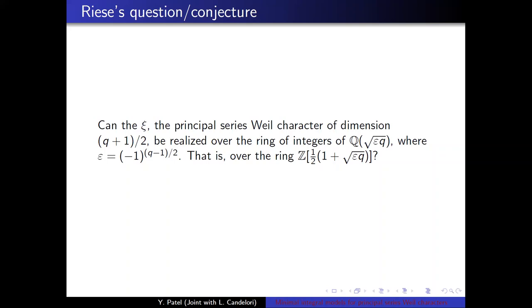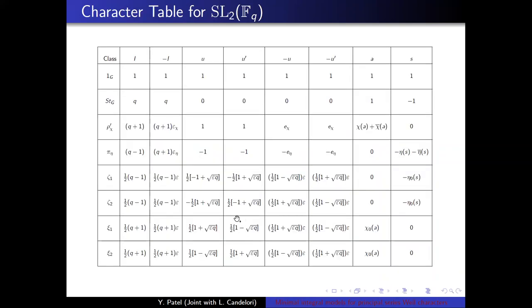So why would Ries make this conjecture? Well, the character table, can everyone see this character table, these entries? Okay, thank you. So why would he do that? Well, the character table gives the reason why. The traces of the Weil characters for several of the conjugacy classes have elements in that minimal ring, this 1 plus square root of epsilon times 1 half, or negative 1. So these entries lie in that minimal ring, so it was a natural place to start.